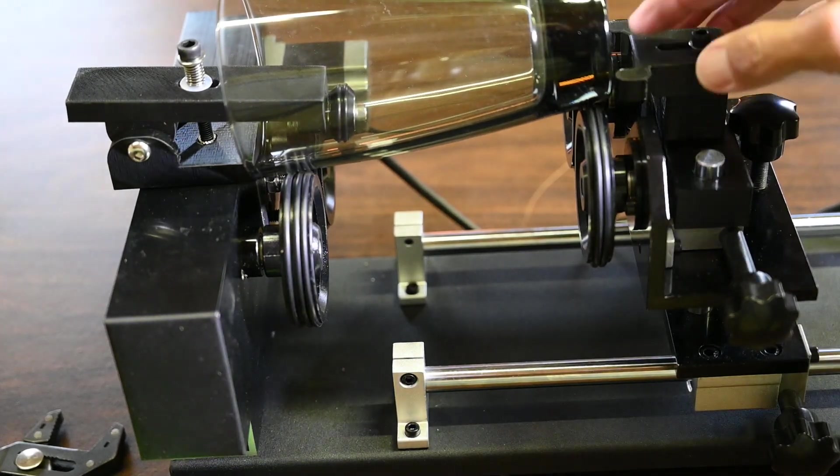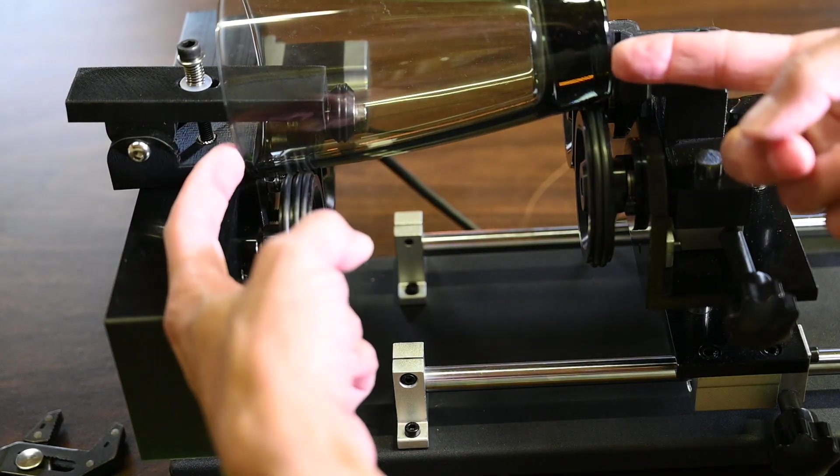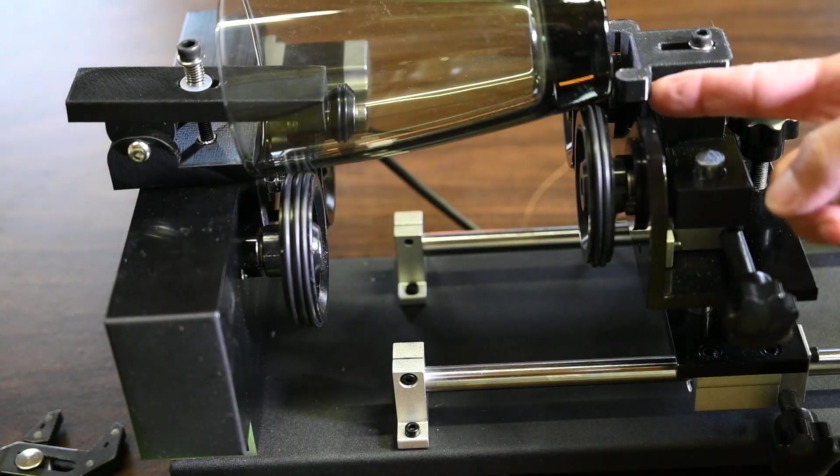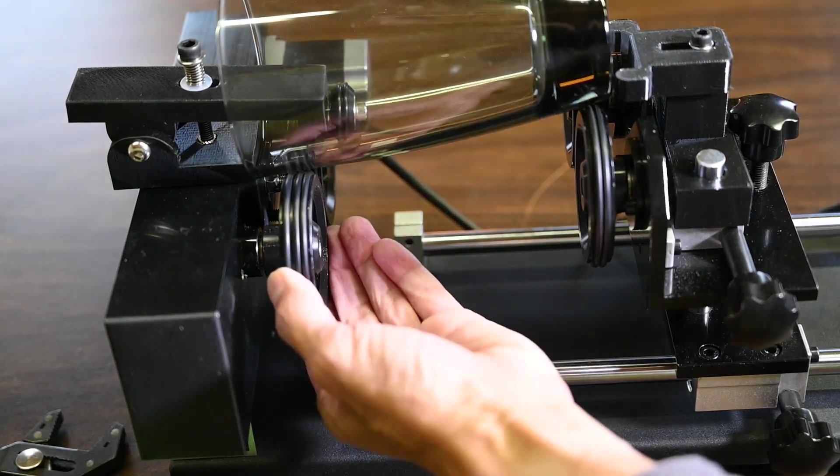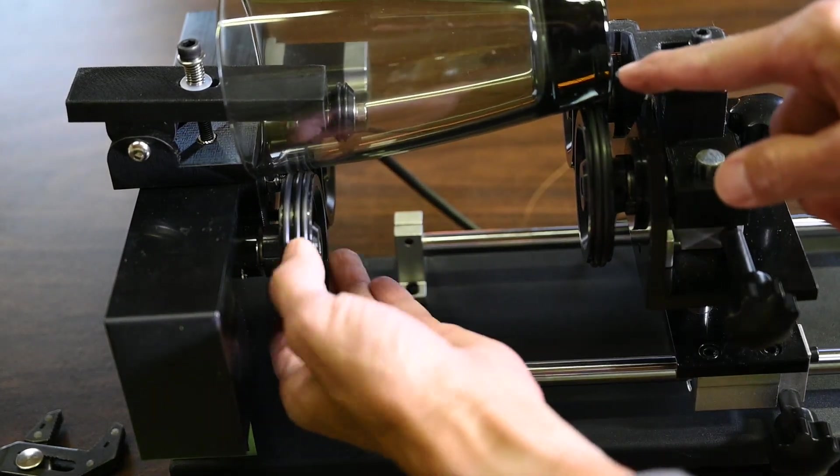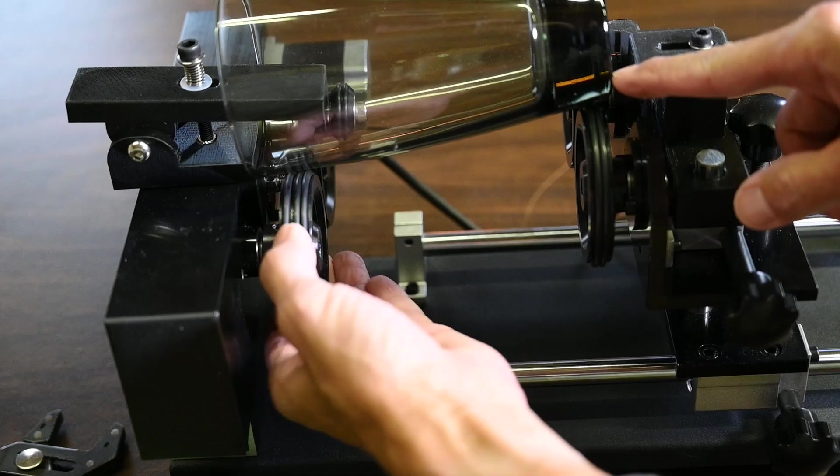The one thing that you don't want to do is to pinch your glassware in so tight between the rear arm and the front of the plate that you're now causing problems. And it can't turn because you have too much friction either on the front or the back.